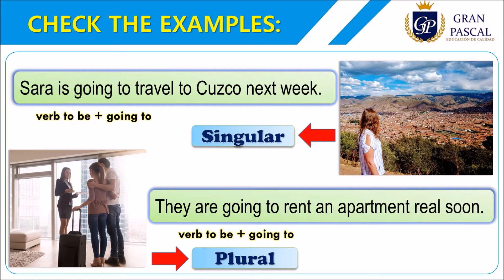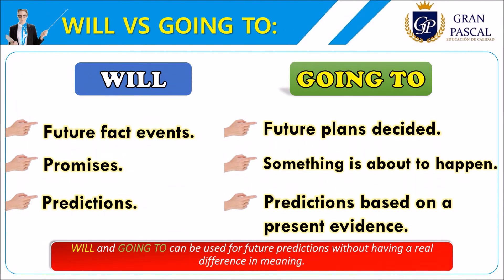For example: 'Sara is going to travel to Cusco next week.' According to the picture, Sara is one person, so we use the verb to be in singular — 'is' — plus 'going to.' For plural nouns we use the verb to be in plural — 'are.' For example: 'They are going to rent an apartment.' The only difference between the two sentences is the verb to be: singular 'is' for one person, and plural 'are' for multiple. For the pronoun I, we always use 'am.'